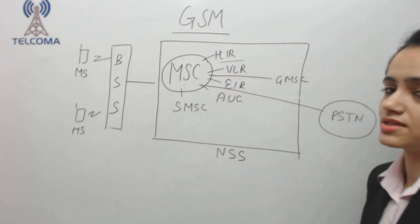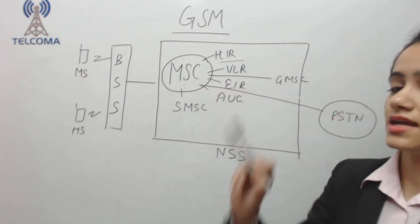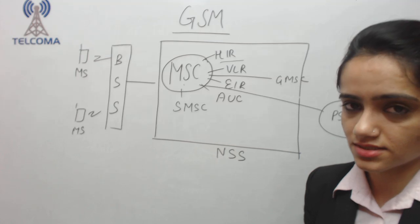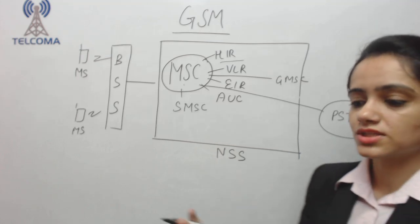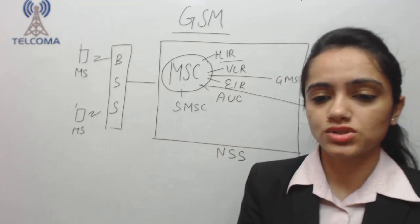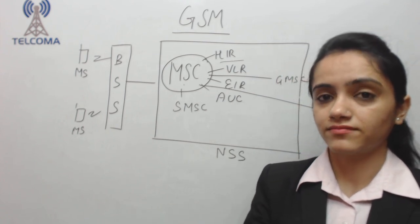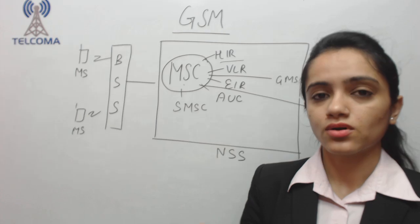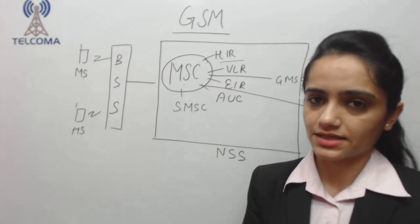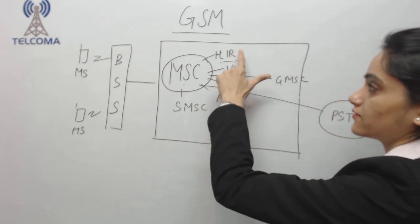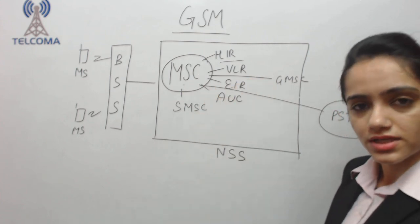And we talk about the very first database with the MSC, which is HLR. HLR is home location register. From the home location register, that means it stores the permanent location of the user. When we purchase a SIM card, we give them a permanent address. So accordingly, HLR will be assigned to us. That means HLR will save our all permanent locations.